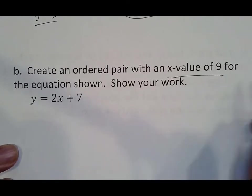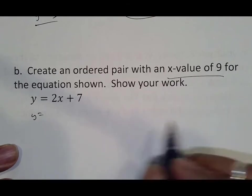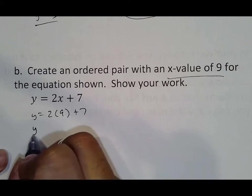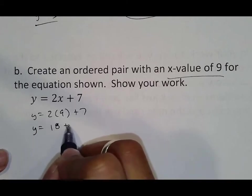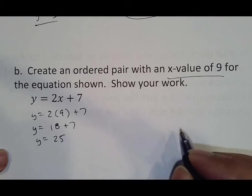Create an ordered pair again, x value of 9. So what we're going to do is turn our x into a 9, because that's what x is. So 2 parenthesis 9 plus 7, so y equals 2 times 9 is 18, plus 7, therefore y is equal to 25.